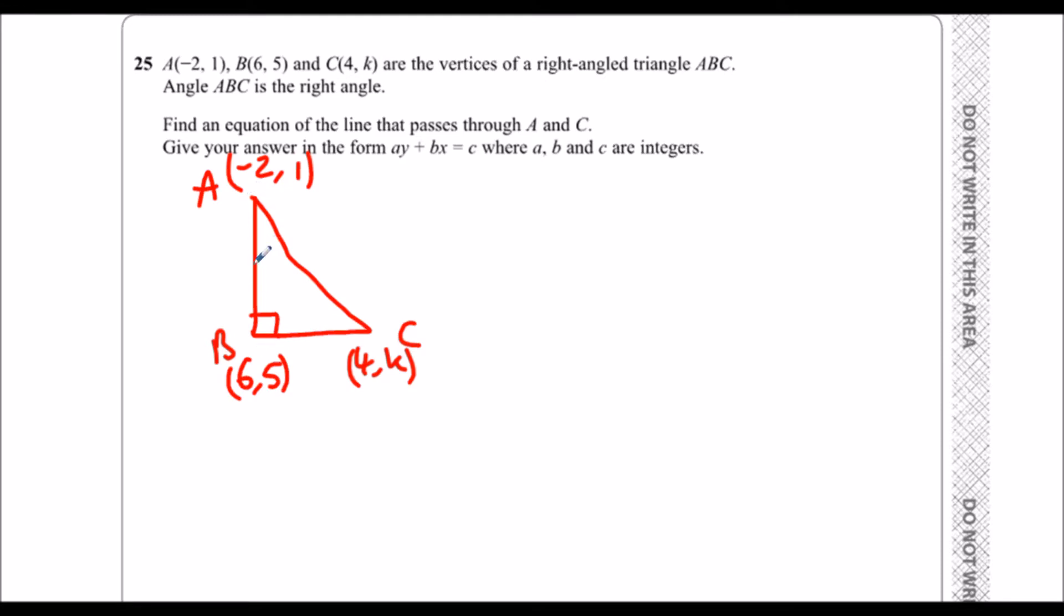So what do we do? We work out the gradient of this line, and then we know the gradient of this line, because two lines that meet at a right angle are perpendicular. So if we work out the gradient of AB, I'll just put a note, AB, and the gradient is Y2 minus Y1 over X2 minus X1. So we'll just label these X1, Y1, X2, Y2, and substitute them in. So 5 minus 1 over 6 minus minus 2, which is 4 over 8, which is 1 half. So that's the gradient of this line.